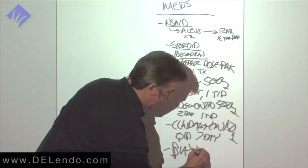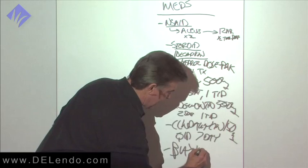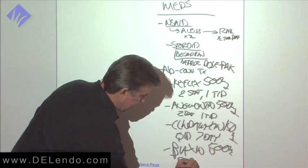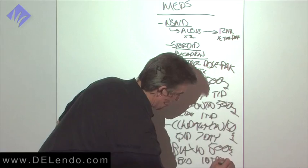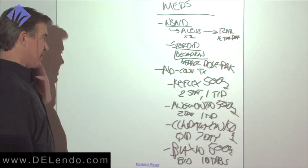Another option that I like is Biaxin. It's a macrolide, 500 milligrams. And this is a BID, so you're going to give them 10 tabs. And real effective. Erythromycin will do nothing for you. This will help your patients.